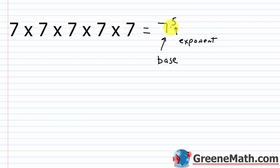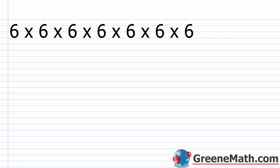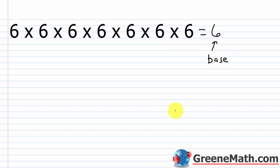This is 7 to the 5th power. Next: 6 times 6 times 6 times 6 times 6 times 6 times 6. The base is 6 — that's the number being multiplied by itself. The exponent tells me how many factors: 1, 2, 3, 4, 5, 6, 7. So this would be 6 to the 7th power.